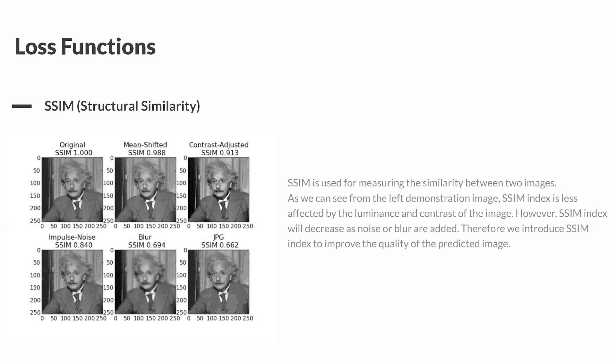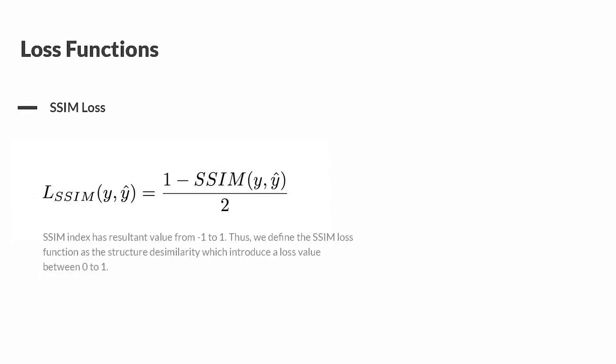The third one is SSIM loss. SSIM is an index measuring the structural similarity of two images. It is less affected by luminance and contrast, but it can be largely affected by noise and distortion. The SSIM index has value from negative 1 to 1, so to use this representation as loss, we must modify it as this formula.